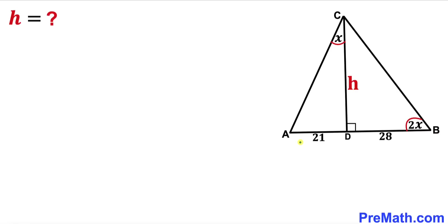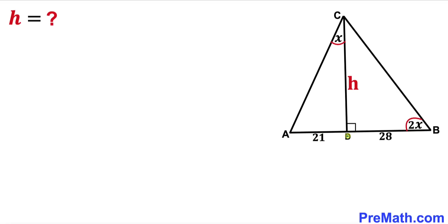Welcome to pre-math. In this video we have got this triangle ABC along with this altitude CD represented by height H. We have angle ABC as 2x and angle ACD as x. Furthermore, line segment AD is 21 units and line segment BD is 28 units. We are going to calculate this height H.